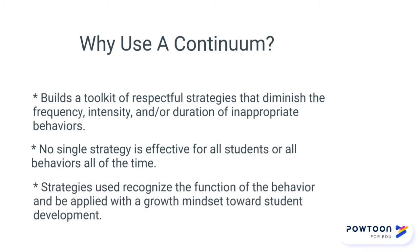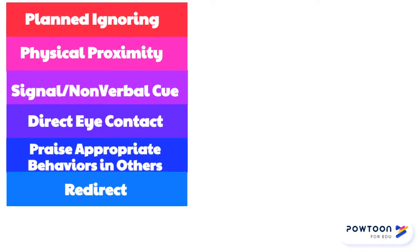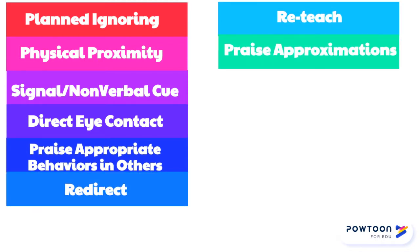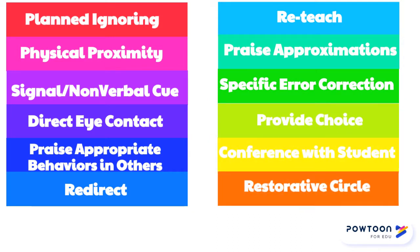A continuum of strategies will also allow you to recognize the function of the behavior and apply a growth mindset to help your students learn. Your strategies are: planned ignoring, physical proximity, signal or nonverbal cues, direct eye contact, praise appropriate behaviors in others, redirect, reteach, praise approximation, specific error correction, provide choice, conference with student, and restorative circles.